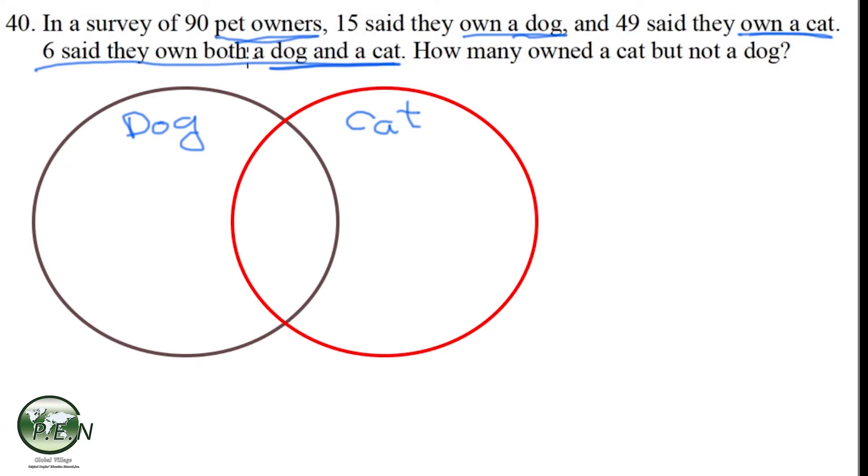And so these six that own both a dog and a cat, that's the overlapping area. So the six go here.